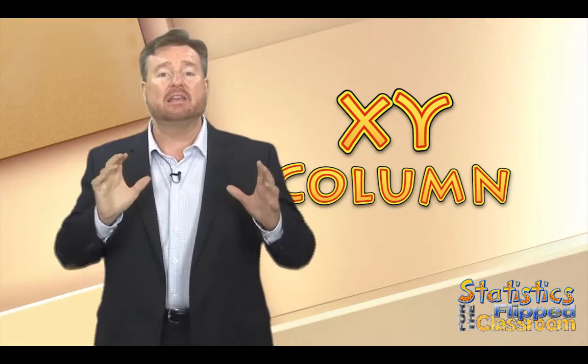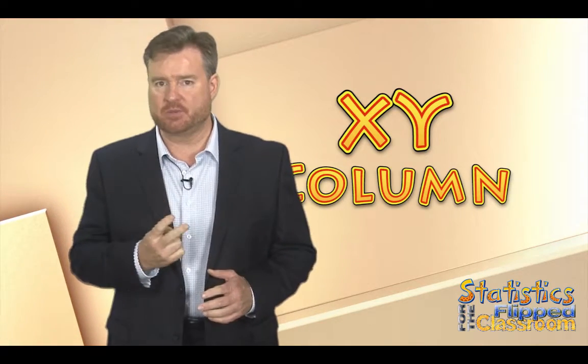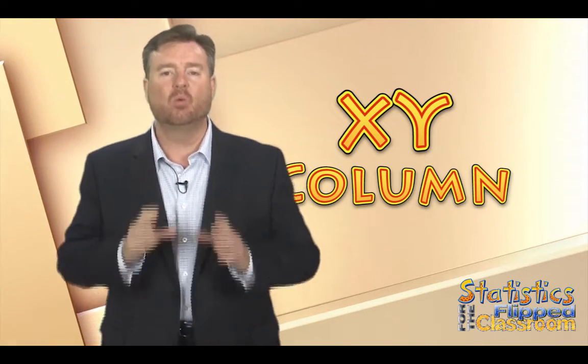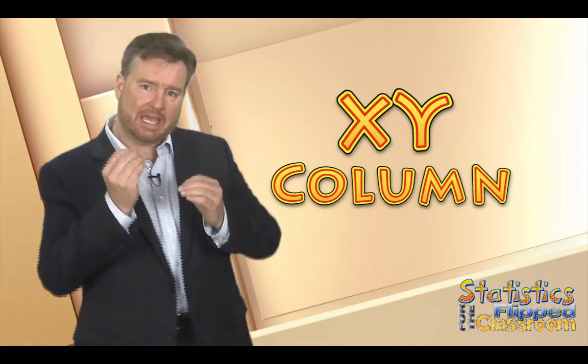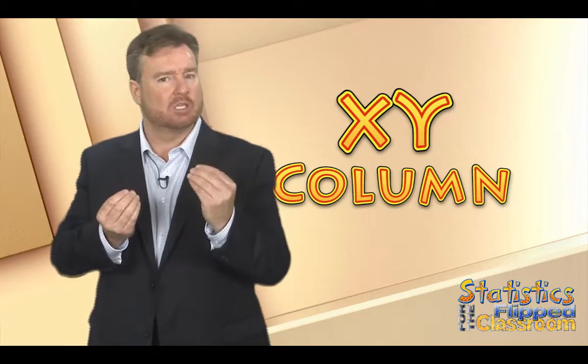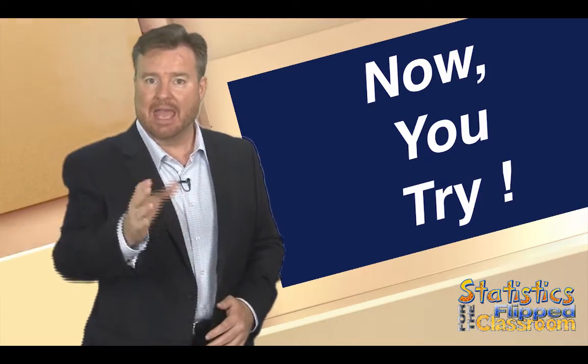Now that leaves the x, y column. Whenever we see two variable names next to each other with no mathematical notation, we multiply. To create this column, we multiply each x value by its corresponding y value. Stop the video, finish the x times y column, and then come right back and check your work.